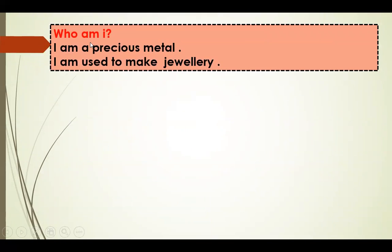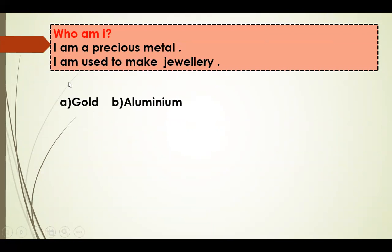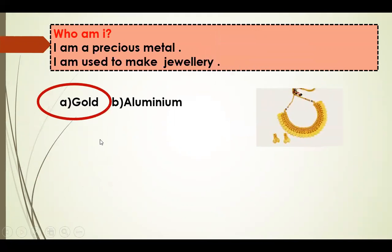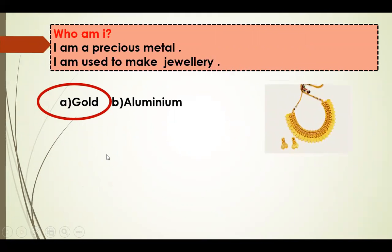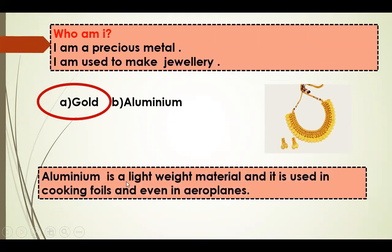Another question. Who am I? I am a precious metal. I am used to make jewelry. Options: Gold, Aluminium. The answer is Gold. Note: Aluminium is a lightweight material and it is used in cooking foils and even in aeroplanes.